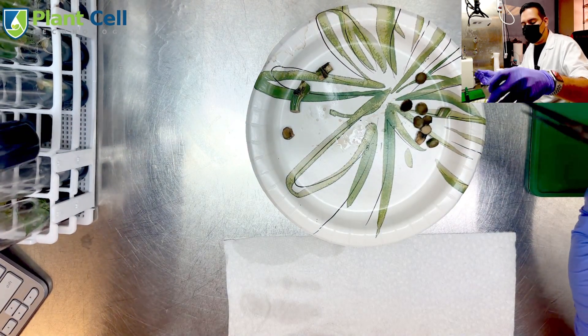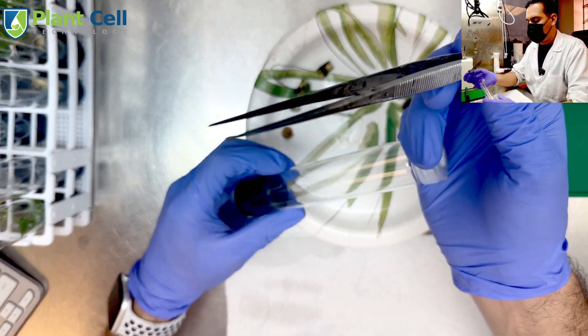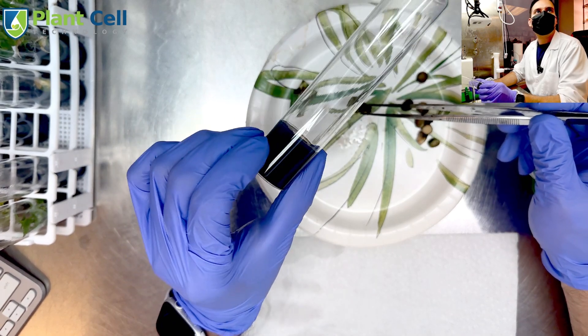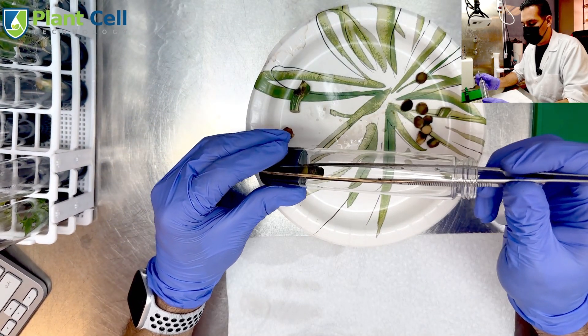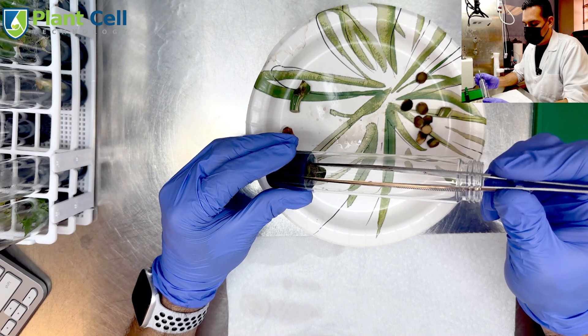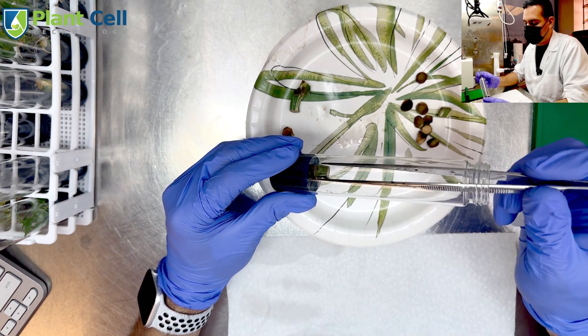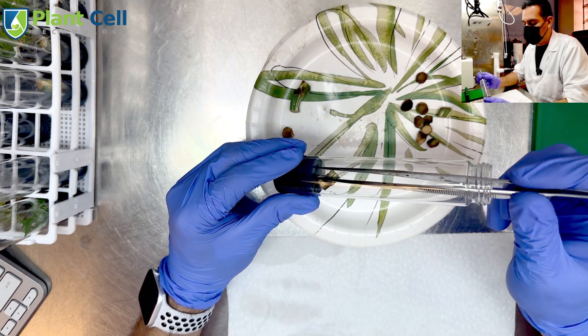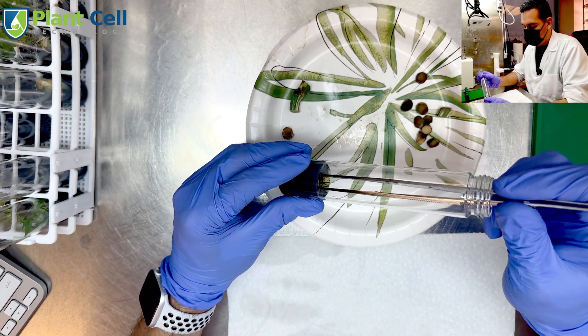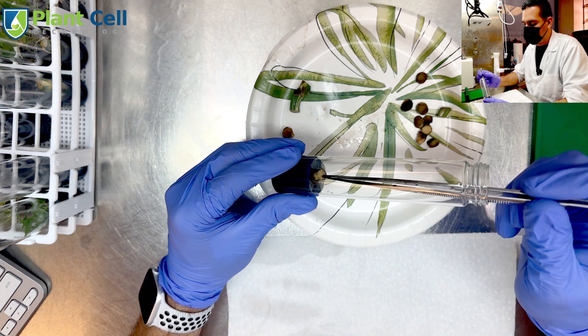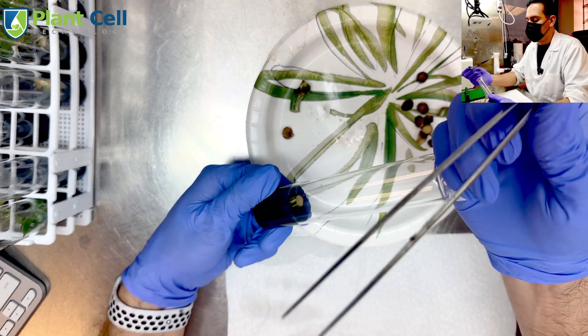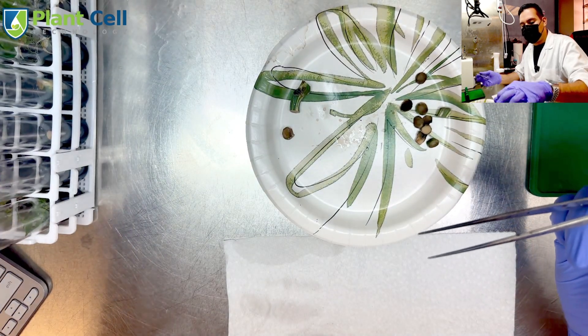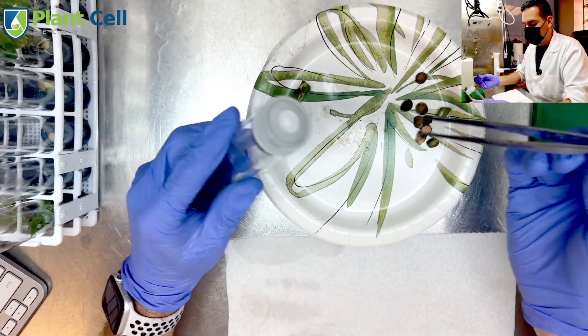I like to use test tubes instead of larger containers because test tubes use very little media, between 15 to 20 milliliters, and if the plants get contaminated then I don't waste as much media. That's why I always recommend beginners, or actually everybody, when starting cultures to start them in something small like a test tube or petri dish.